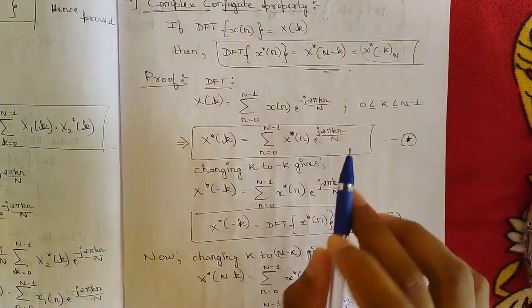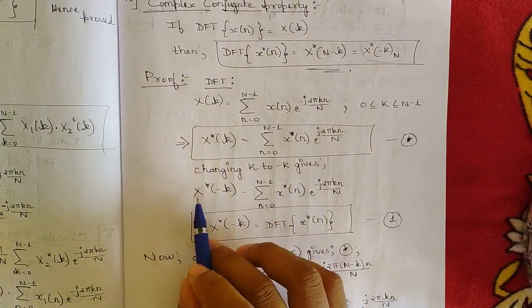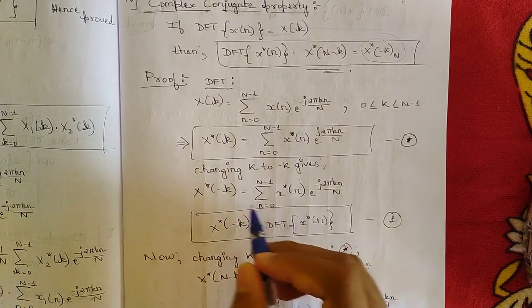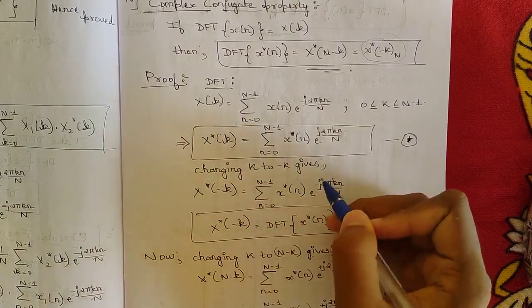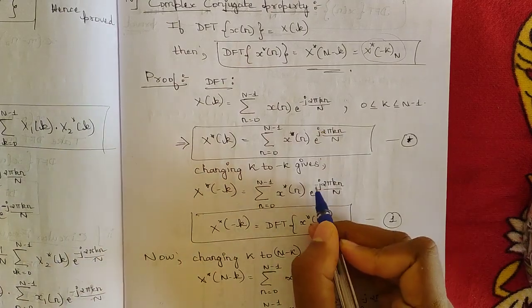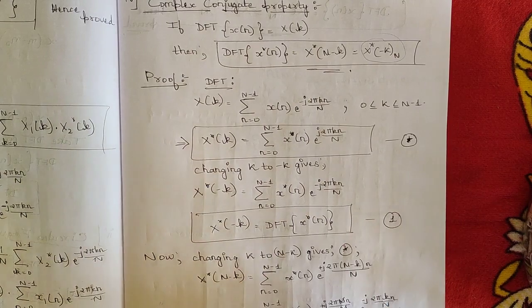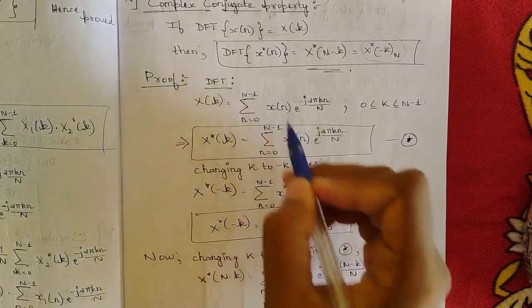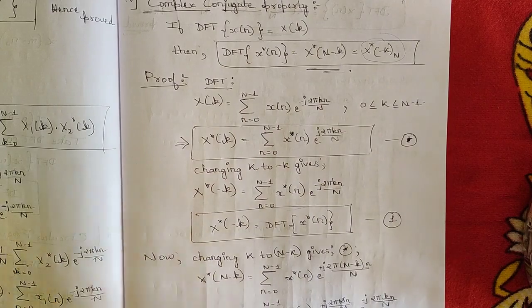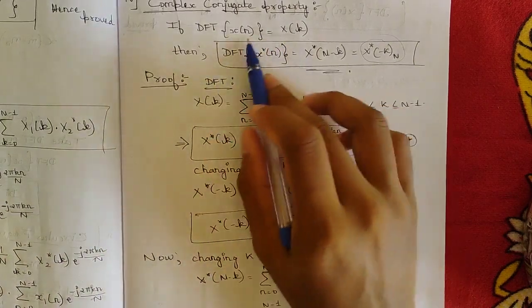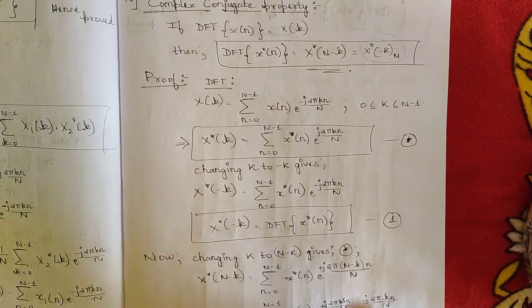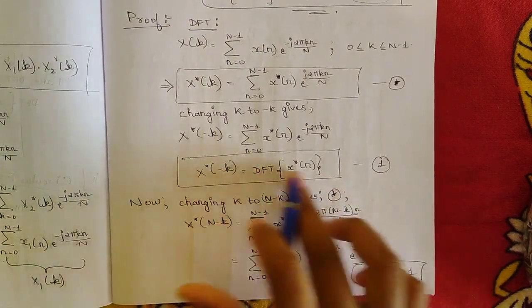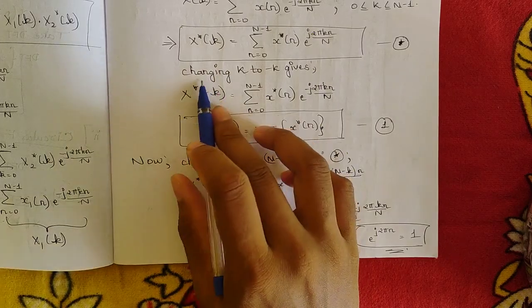Now change k to -k: X*(-k) = summation from n = 0 to N-1 of x*(n) · e^(-j2πkn/N). This means DFT{x*(n)} = X*(-k). This is the first part we needed to prove. Write this as equation 1. Now we still need to prove DFT{x*(n)} = X*(n - k), so that part is pending.